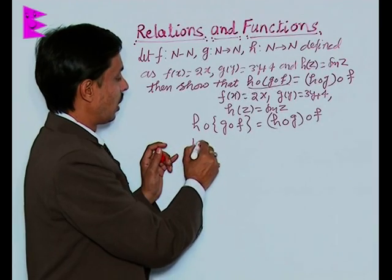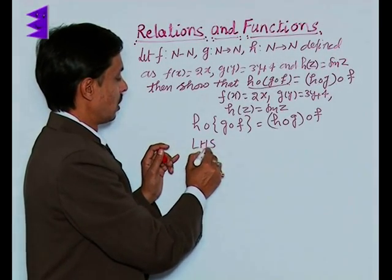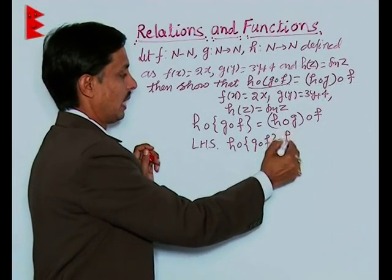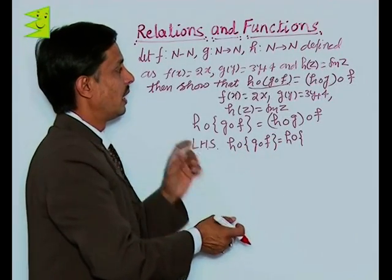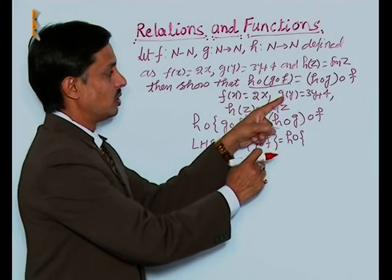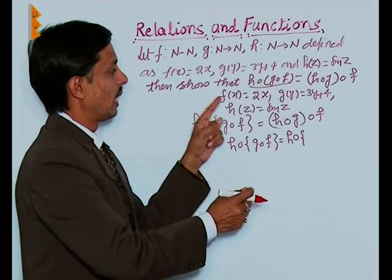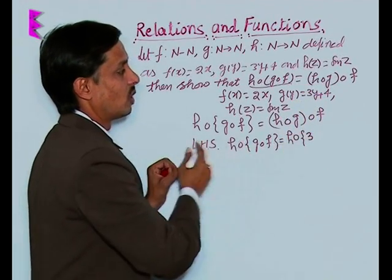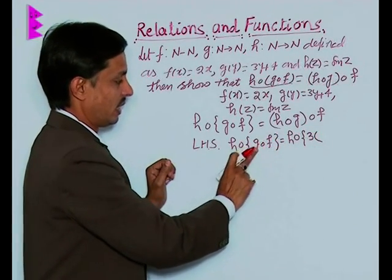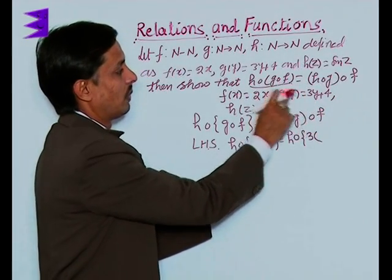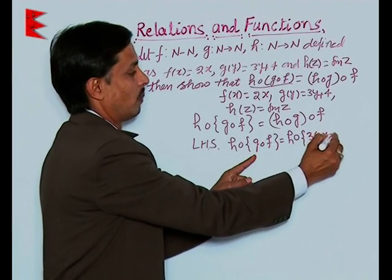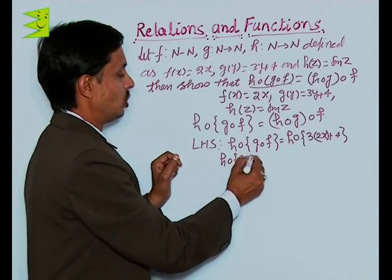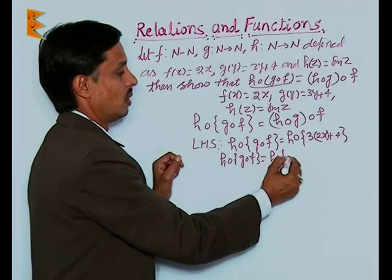First, if we calculate the left hand side, we will find h of g of f. Finding g of f means that in the function g, which is 3y plus 4, we will put 2x. This will be three times f, so g∘f equals h of 6x plus 4.